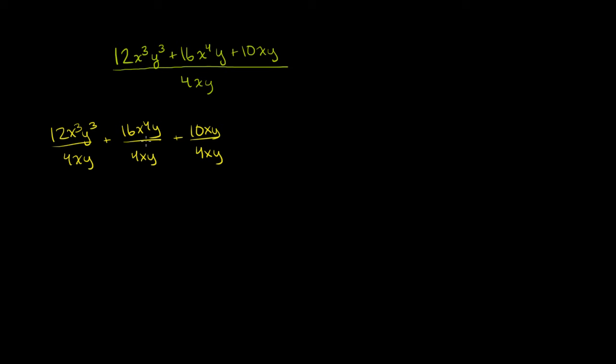There are multiple ways to think about it. One is, if I have a plus b over c, this is clearly the same thing as a over c plus b over c. We're just taking the fraction apart. If we did it in reverse, we would just be adding fractions.